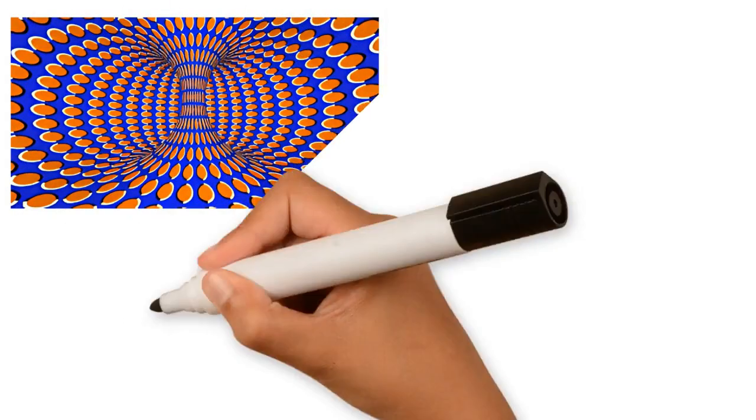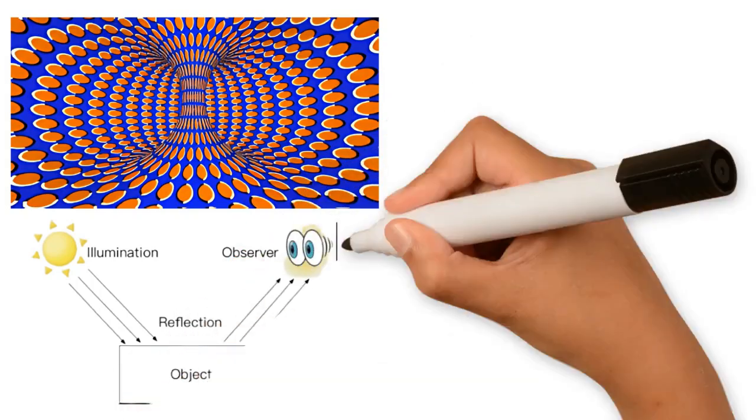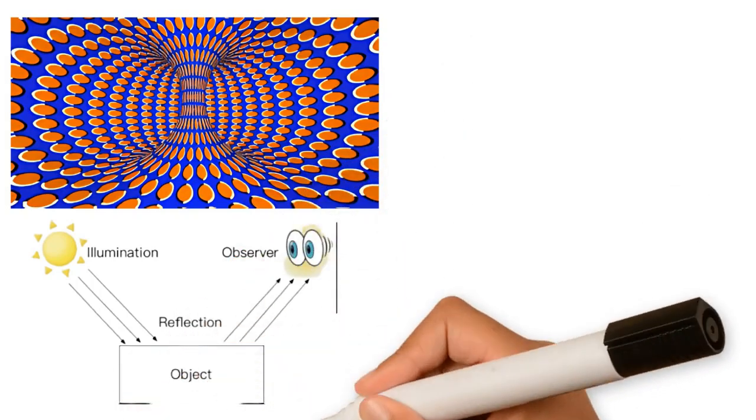Optical illusions are fascinating phenomena where our visual perception differs from reality. These illusions occur when the information gathered by the eye is processed by the brain in a way that leads to a misinterpretation of what we see.